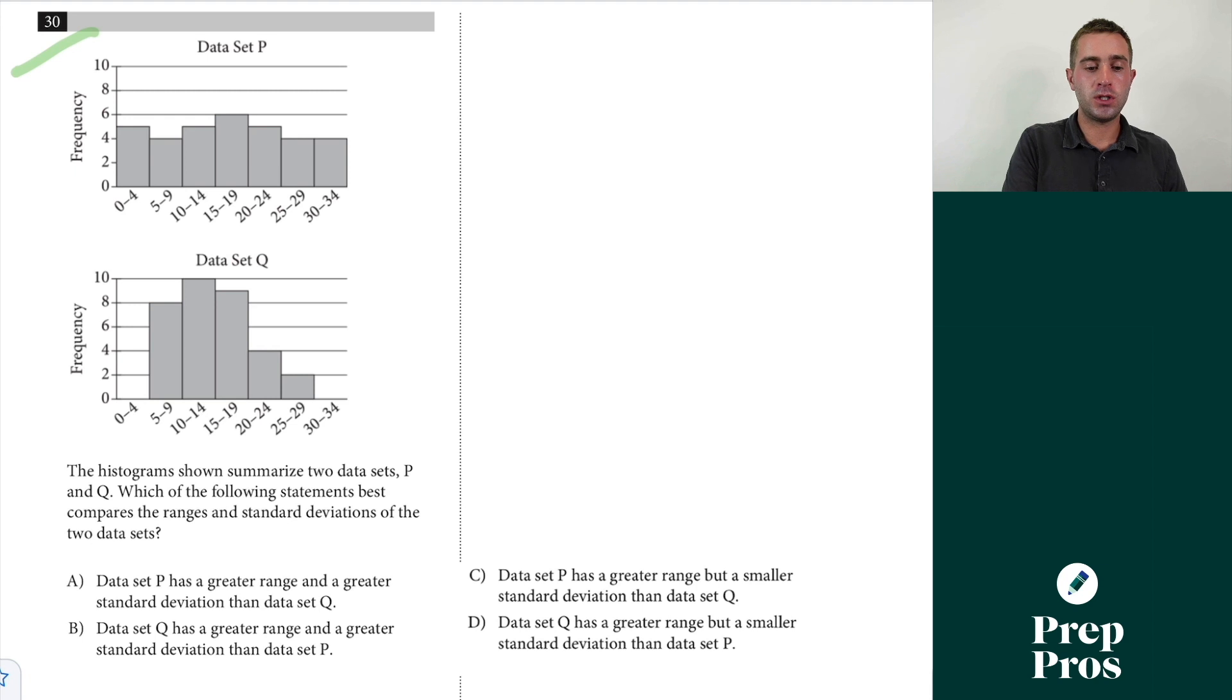So in the SAT what you can always notice is if something has a bigger range it is also going to have a greater standard deviation because if we look at the data set points for data set p they're all more spread out in comparison to here we have our data more closely clumped together. So if I'm looking at this we know range is our difference between our smallest and our largest so we can see that data set p has a greater range and therefore we can also tell that it has a greater standard deviation.